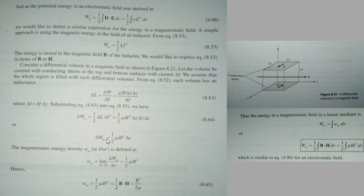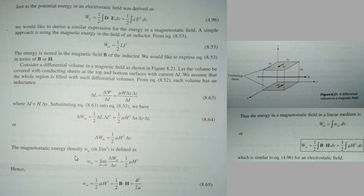Now, the magnetostatic energy density — denoted small wm — is defined over the volume by taking the limit as delta V tends to zero of delta Wm divided by delta V. The delta V terms cancel, giving the final expression: wm equal to half mu H square.